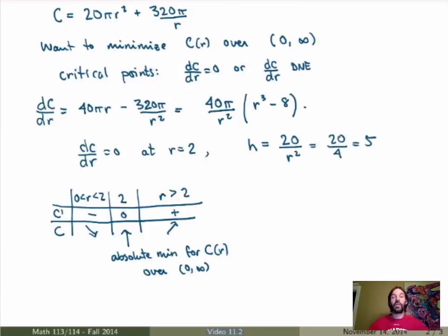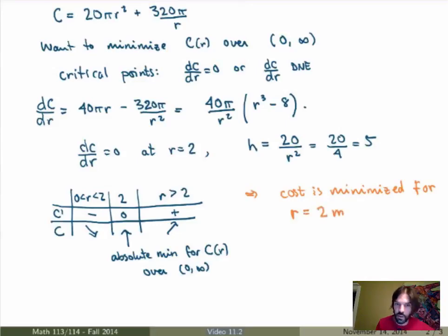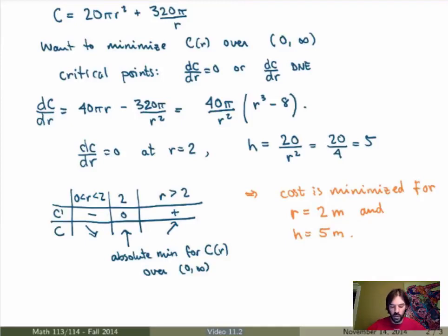So that's pretty much the end of the problem. I would conclude by saying that the cost is minimized for the radius being 2 meters — reinstating the units — and the height as we've just calculated is equal to 5 meters. And that would be the end of the problem. You could also calculate the actual cost for this choice of radius and height, even though that's not part of the question — just for fun, using the cost function we have. But anyway, this is the answer.